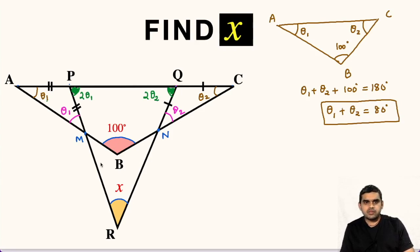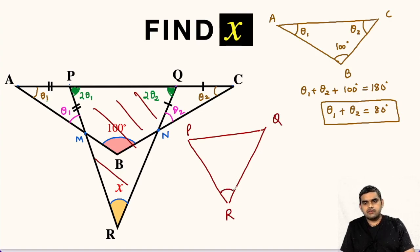Now let us focus on this triangle PQR. Let me draw it outside. So this is P, this vertex is Q, and this is R. So R vertex is unknown, that is x which we have to find. This is 2 times theta 1 and this is 2 times theta 2.